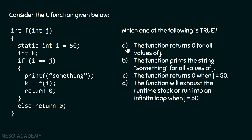Is it A — the function returns 0 for all values of j? Is it B — the function prints the string 'something' for all values of j? Is it C — the function returns 0 when j is equal to 50? Or is it D — the function will exhaust the runtime stack or run into an infinite loop when j is equal to 50?